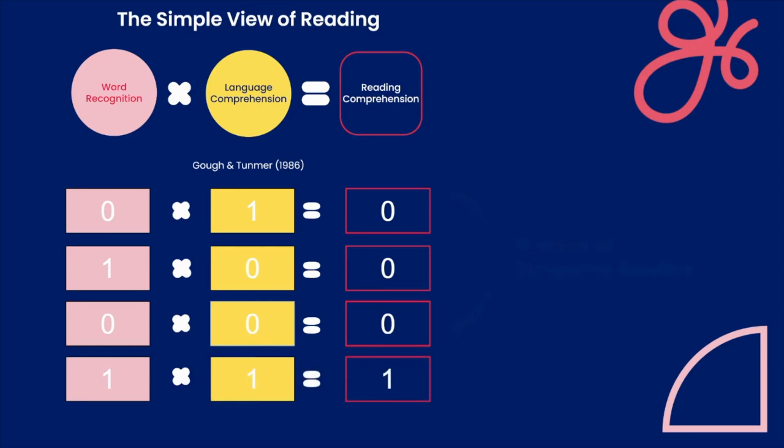As mentioned, these top three equations all represent profiles of struggling readers. Through this model, it is very evident that how we must intervene for each of the different profiles will be with a different focus in instruction.